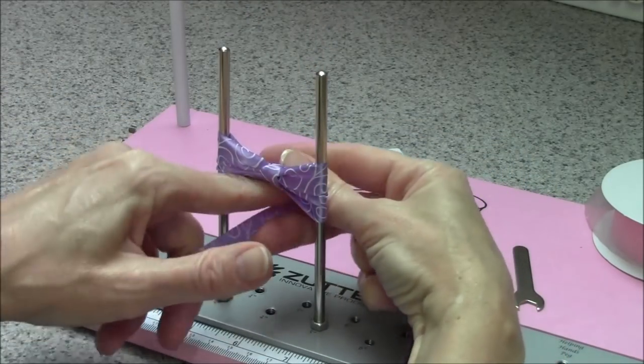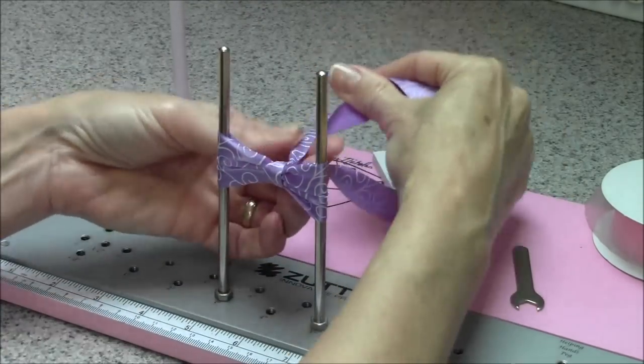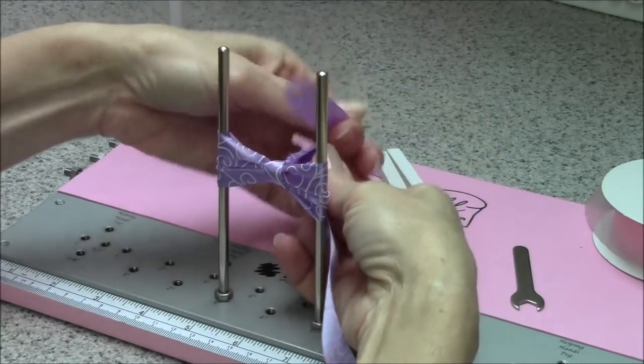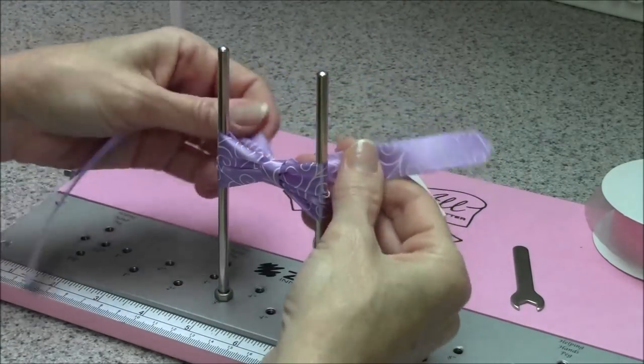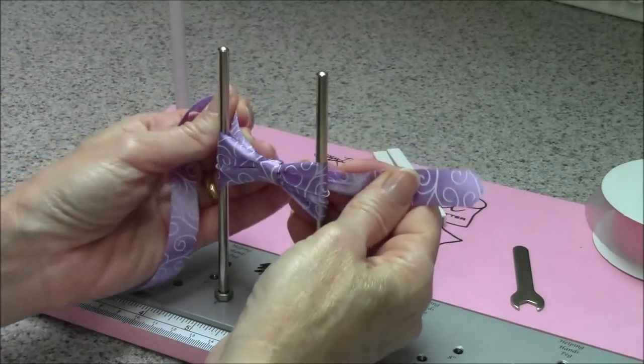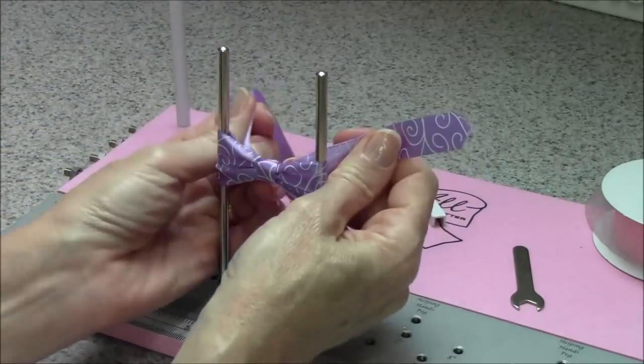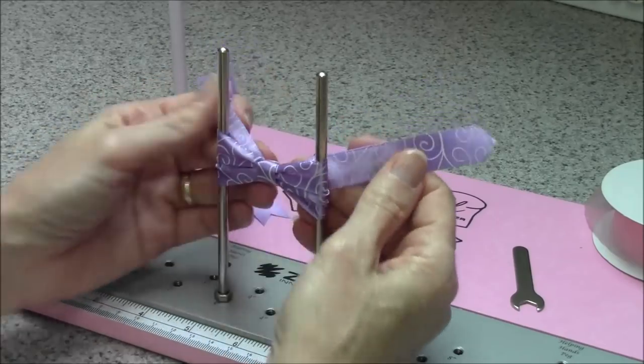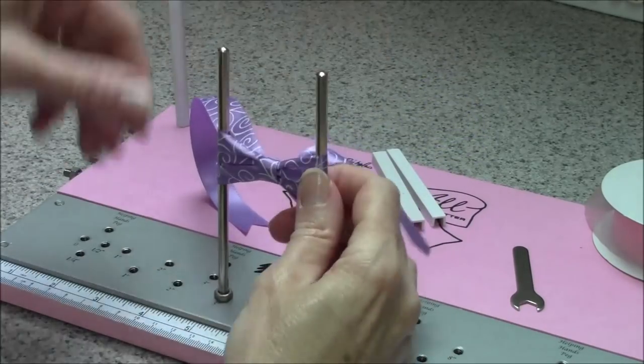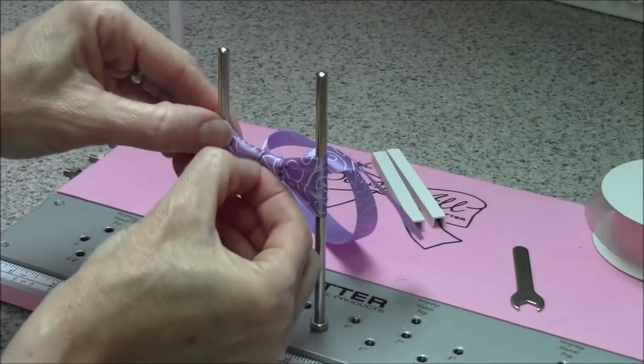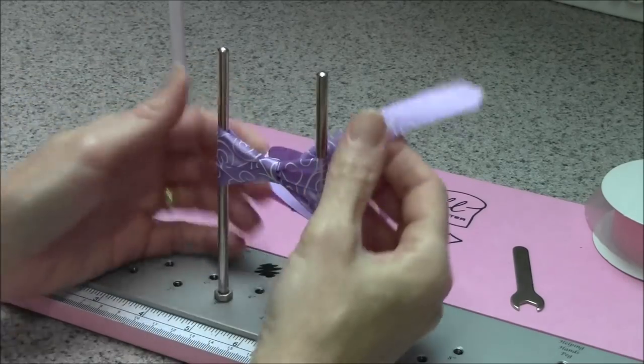Cross over in the back and finish your bow just as we've been doing. Make sure as you're tightening your tails that the print is facing you. Take a look at it, if there's anything that needs a little adjusting, go ahead and do that now.